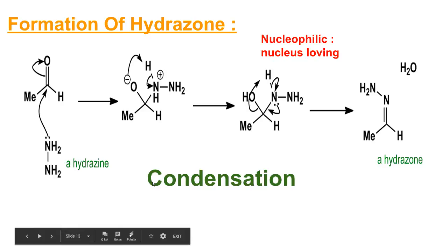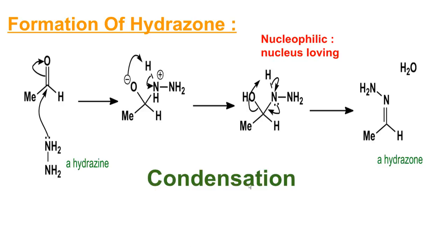The first step is the formation of a hydrazone via a condensation reaction. A condensation reaction is a chemical reaction in which two molecules are joined together to form a larger, more complex molecule with the loss of a small molecule — most commonly water. In this step, hydrazine reacts with the carbonyl compound to form the hydrazone. The nitrogen lone pair attacks the carbon of the carbonyl group, which has a partial positive charge since oxygen is more electronegative than carbon.